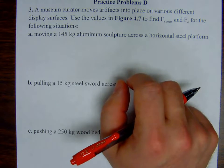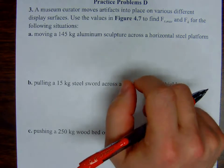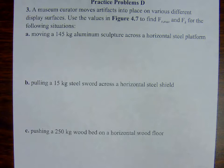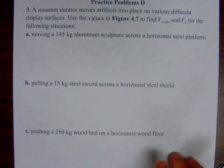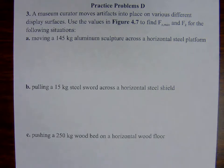Okay, so a museum curator moves artifacts into place on various different display surfaces. That's an annoying pretext. Pretty darn contrived. But use values in figure 4.7, again on page 130 of your textbook, to find FFmax and FK in the following situations.